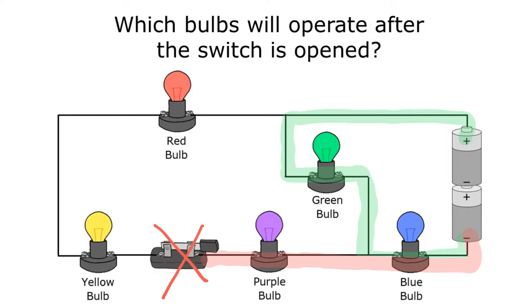Electricity goes all the way through a path or not at all. So if that switch is opened, only the green and blue bulbs would operate.